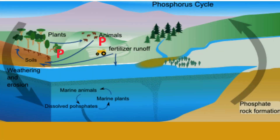Step 3: Return to the Environment by Decomposition. Animals excrete waste and decomposers are able to use the phosphorus in the waste material. Furthermore, when plants and animals die, the bacteria convert the organic phosphorus into inorganic phosphorus in a process called mineralization.